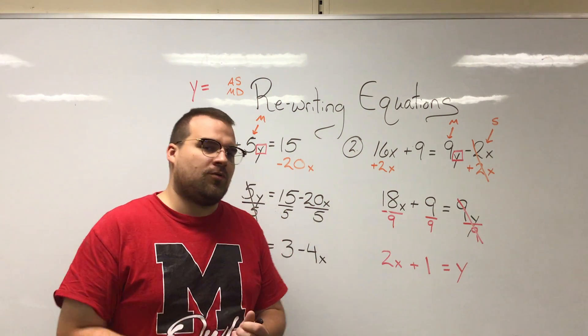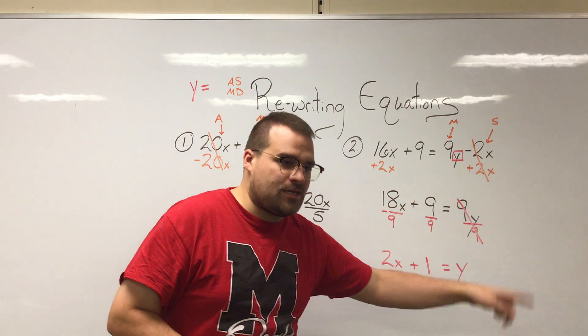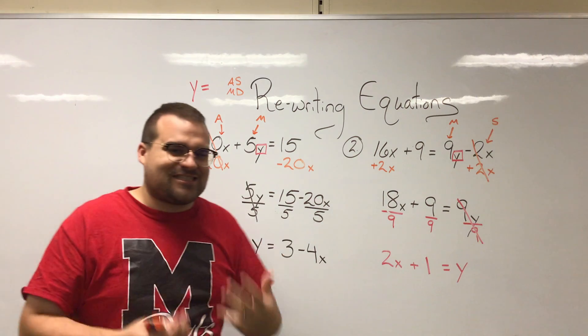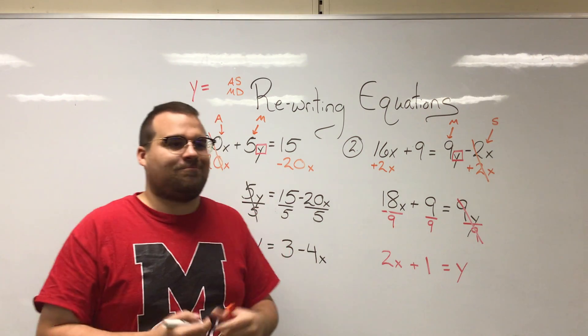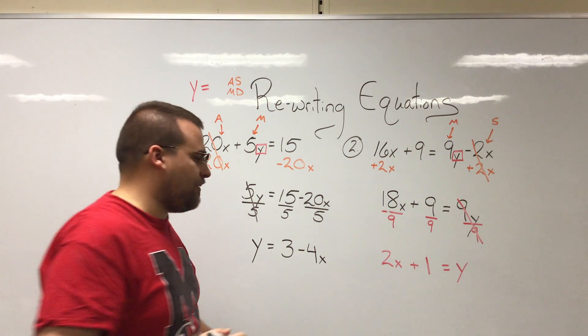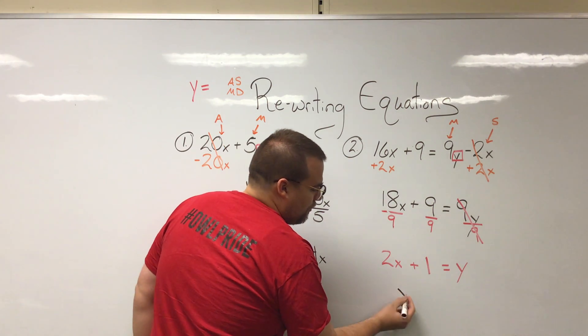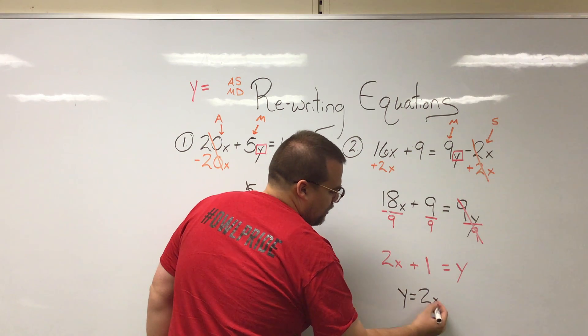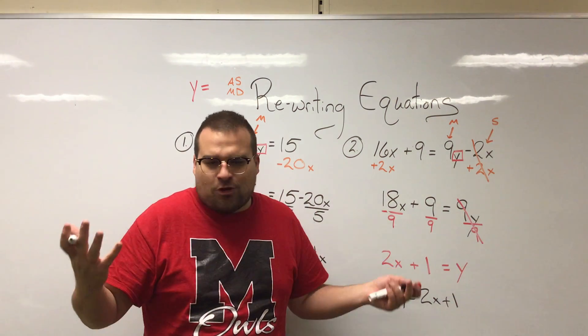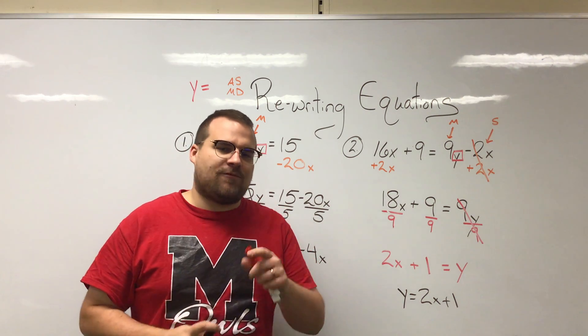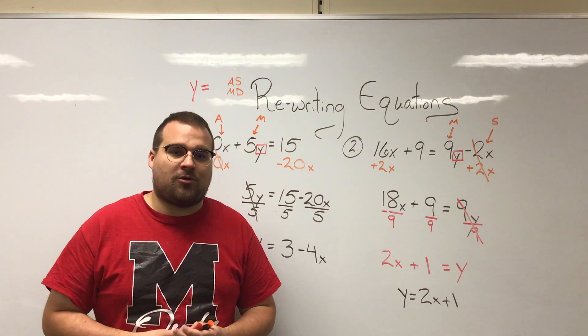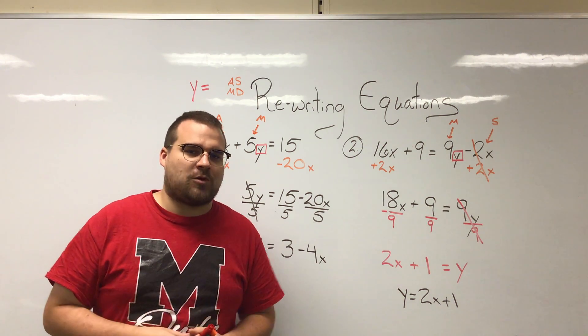And even though that y is on the other side of the equals sign, it's still a y equals problem. That's still the format we want it to be written in. And if it would work better just for the way you mentally think about it, we can write it as y equals 2x plus 1. We can just flip the sides that it's on. That's totally okay too. If you have any questions about these problems, feel free to drop them in the comments below and I'll help out however I can. Thanks for watching guys.